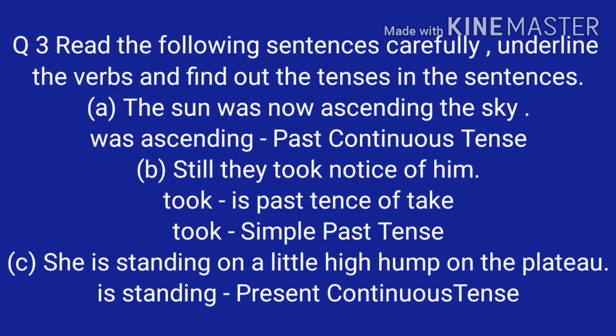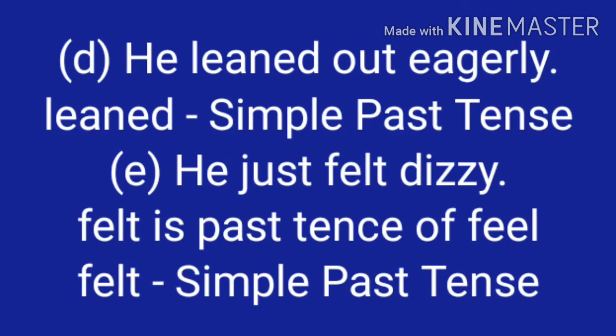Question number three: Read the following sentences carefully, underline the verb and find out the tenses. A — 'The sun was now ascending the sky.' — 'was ascending' — past continuous tense. B — 'Still they took no notice of him.' — 'took' is past tense of 'take' — simple past tense. C — 'She is standing on a little high hump on the plateau.' — 'is standing' — present continuous tense. D — 'He leaned out eagerly.' — 'leaned' — simple past tense. E — 'He just felt dizzy.' — 'felt' is past tense of 'feel' — simple past tense.